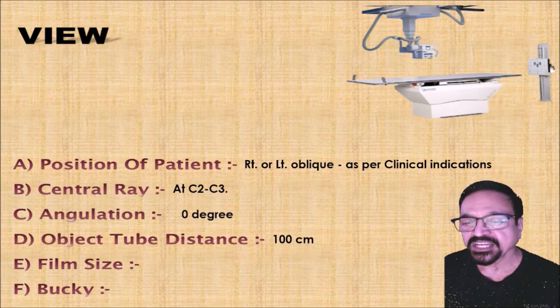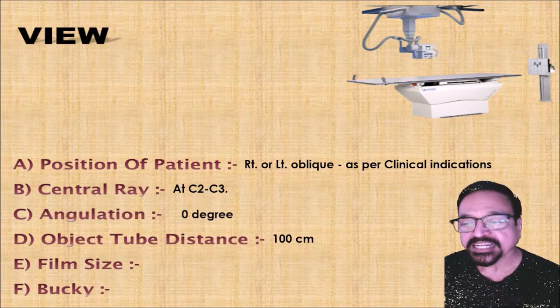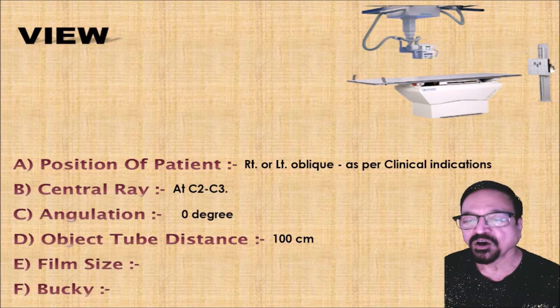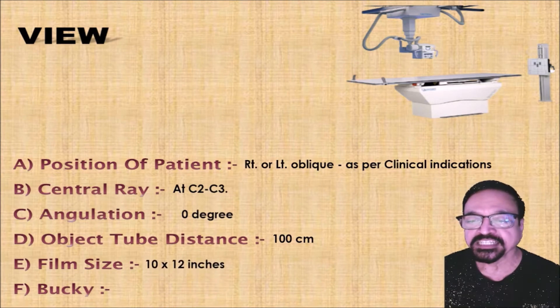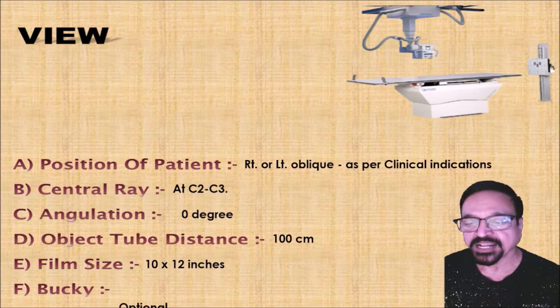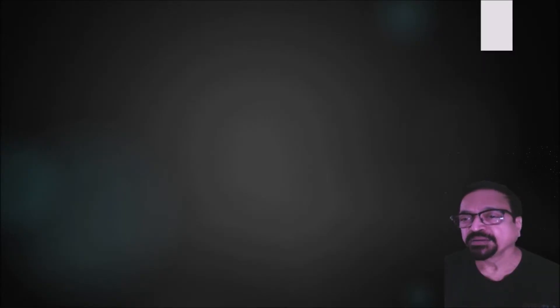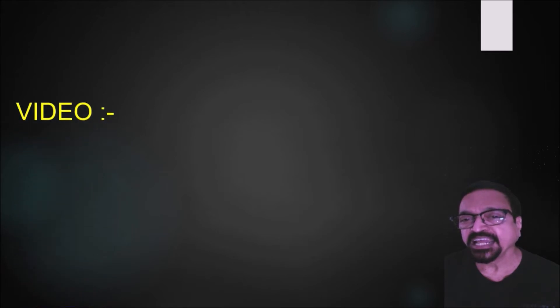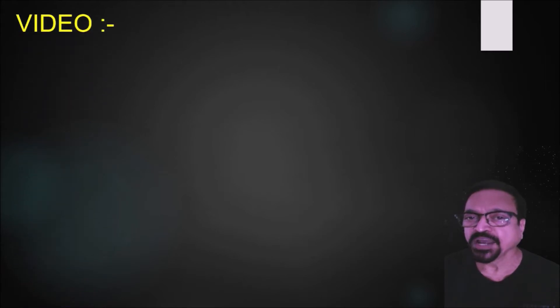The object-to-film distance is 100 cm. Film size is 10 by 12, and bucky is optional. But if you want to have the oblique projection very clearly, you need to have a bucky — that gives a good picture.